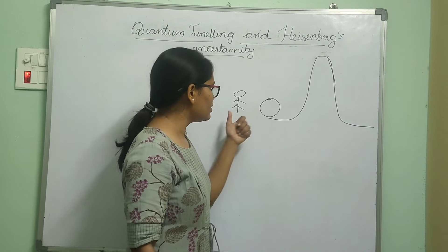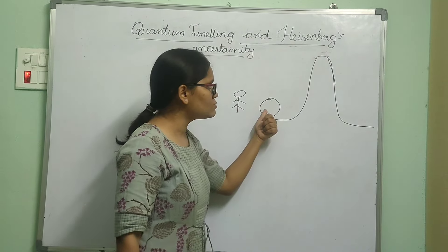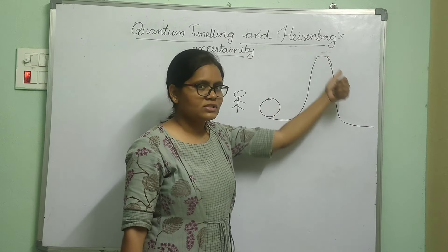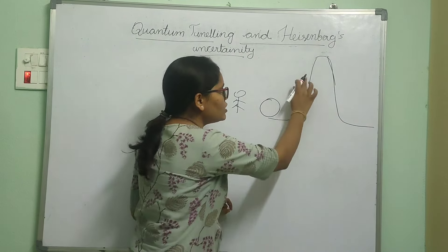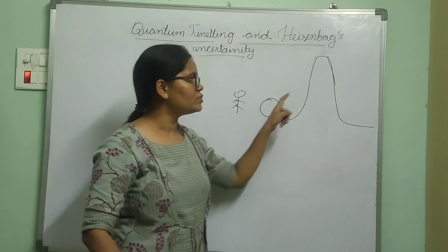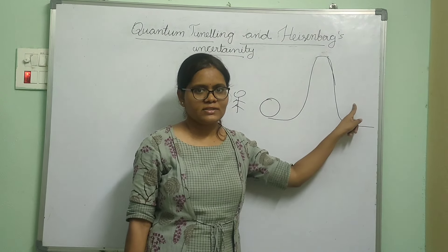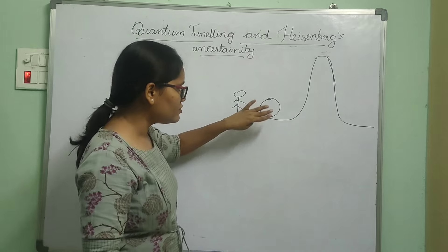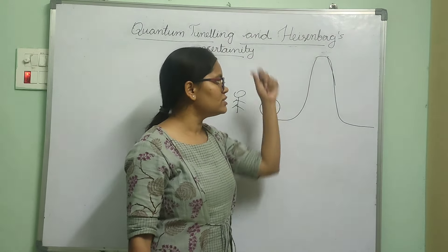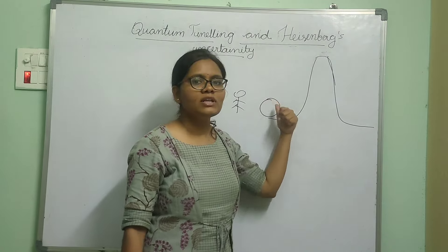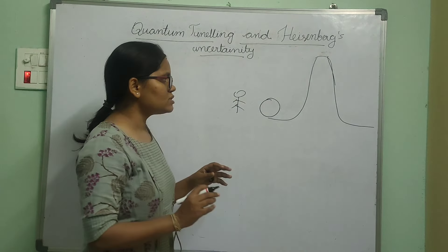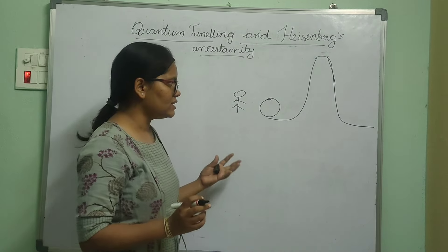If the ball has less energy — if you are kicking this ball with less energy which is not sufficient to cross this hill — then this ball will always roll back and it can never go to the other side of the hill. So if this ball does not have enough energy to surpass this hill, this ball will never make it to the other side. This is the classical understanding.